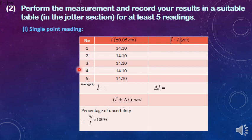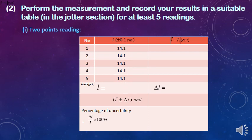Procedure 2: perform the measurement and record your results in a suitable table for at least 5 readings. If you measure the length of the pen using single-point reading, the sensitivity of the measuring instrument is recorded as ± 0.05 cm in the column header. Since the sensitivity consists of two decimal places, all five readings recorded must also consist of two decimal places. If you measure using two-point reading, the sensitivity is recorded as ± 0.1 cm, and all five readings must consist of one decimal place.